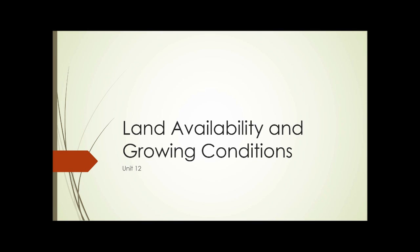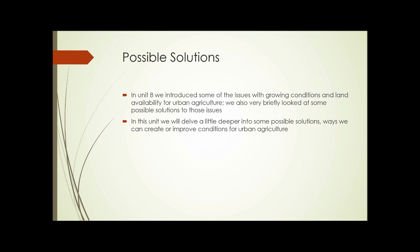Unit 12: Land Availability and Growing Conditions. We did cover some of this before — in Unit 8, we introduced some of the issues with growing conditions and land availability for urban agriculture, and briefly looked at some possible solutions. In this unit, we're going to delve a little deeper into the possible solutions and ways we can create or improve conditions for urban agriculture.